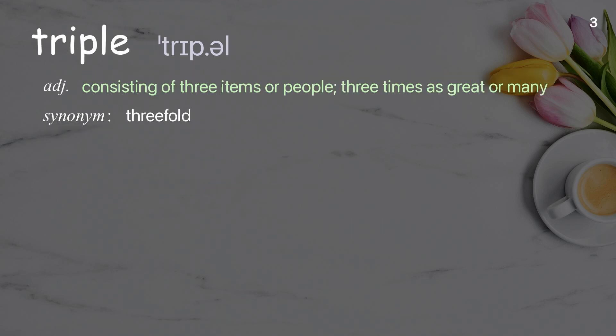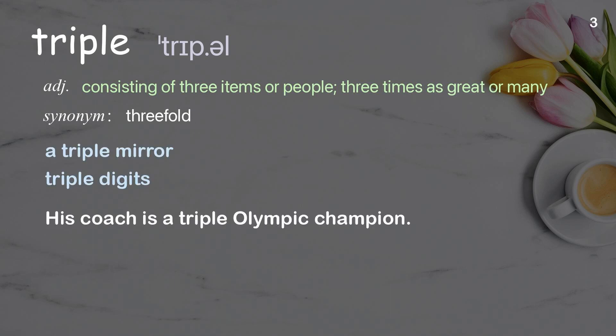Triple: consisting of three items or people; three times as great or many. Examples: a triple mirror, triple digits. His coach is a triple Olympic champion.